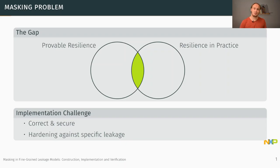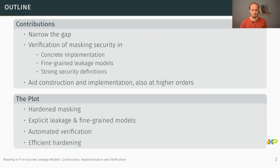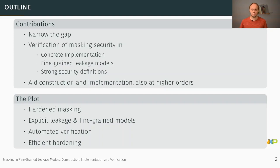In our work we actually shrink the gap between provable resilience and resilience in practice, such that verification can deliver something useful to persons who want to implement masked algorithms on concrete hardware. We do this by performing verification of masking security on concrete implementations at the executable and assembly level, considering fine-grained leakage models that capture what is actually observable in practice, and using stronger security definitions. This aids construction and implementation of the masking countermeasure with the result of practical resilience, not only at first order but also at higher order.